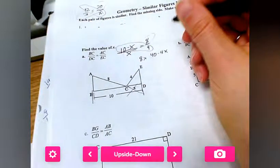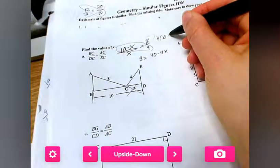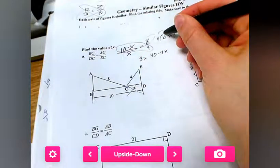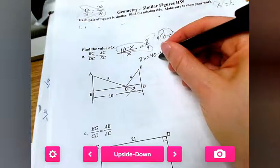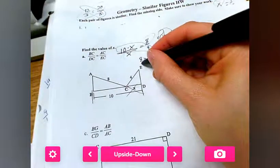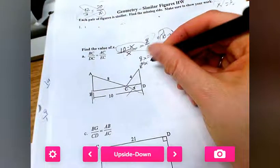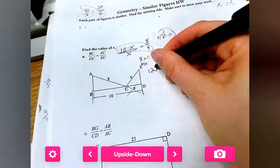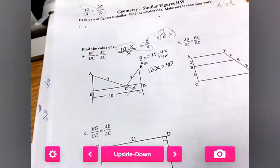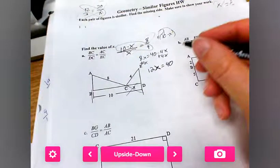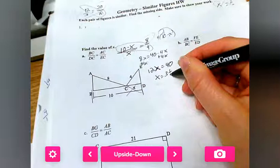You could have gone 4 times 10 minus x, but I just distributed as I went. Now we're going to get all the x's on one side, so I'm going to add 4x to both sides and I get 12x equals 40. Then 40 divided by 12 gives me x equals 3 and one third, or 3.3 repeating.